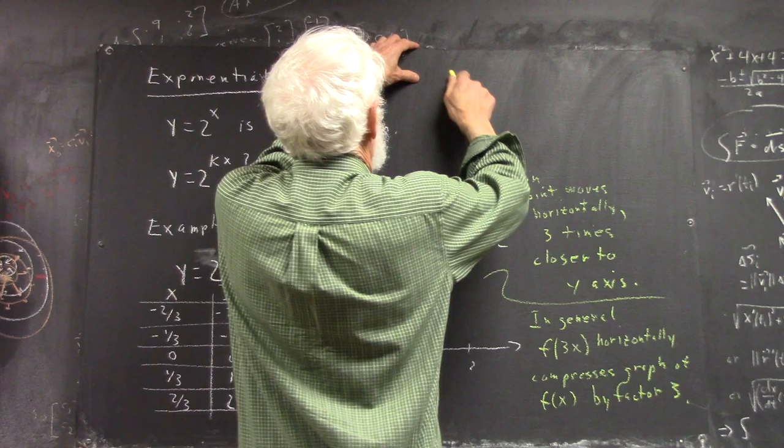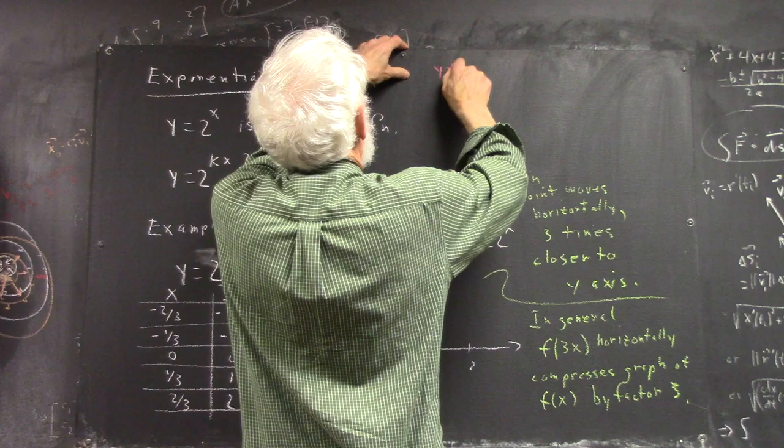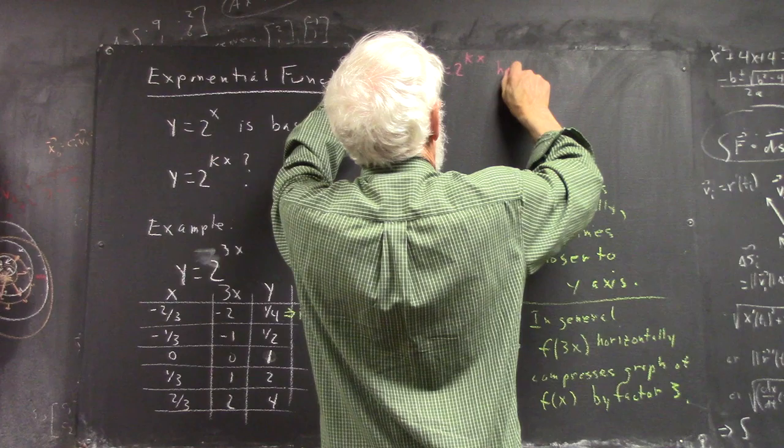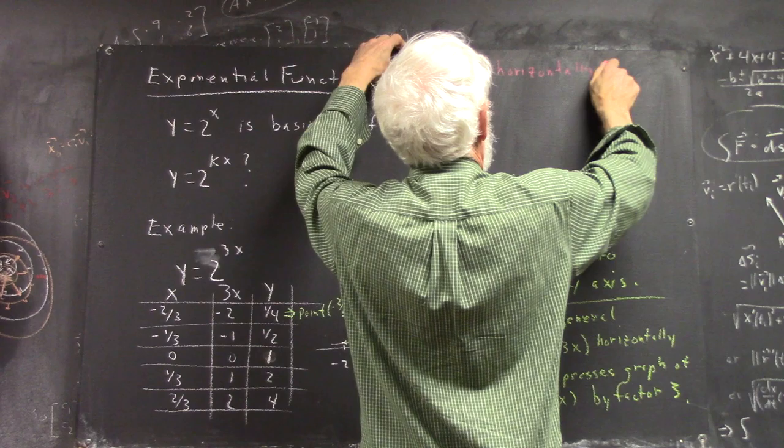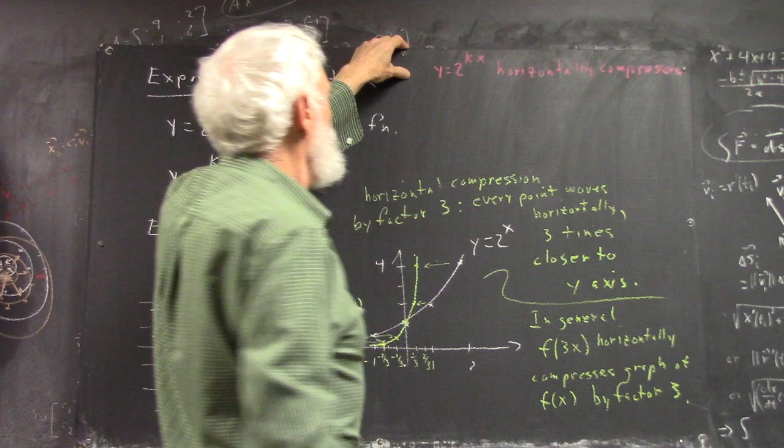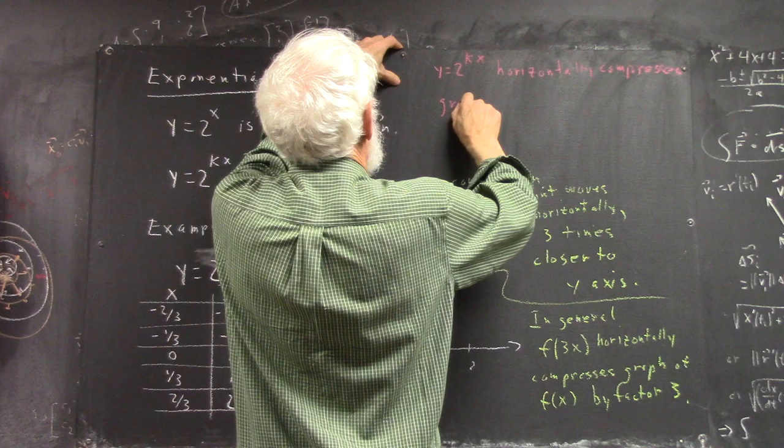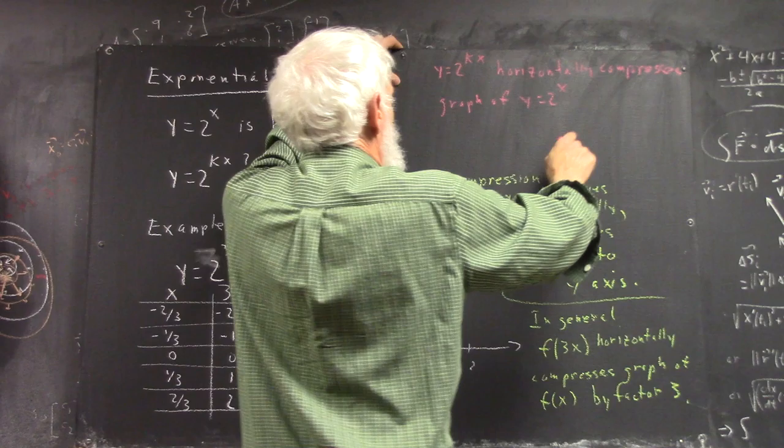Okay, so we can generalize this and make a big statement and say that y equals 2 to the kx horizontally compresses the graph of y equals 2 to the x.